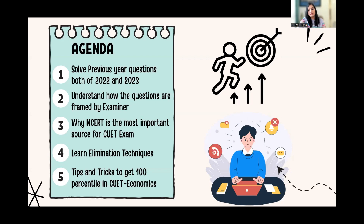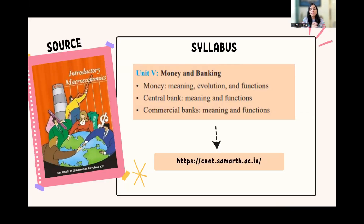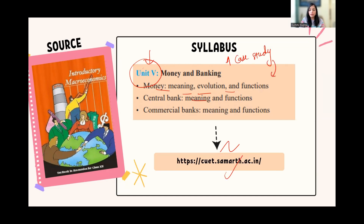This is the agenda of the video — you can pause and give it a read. The syllabus for Money and Banking covers: money — meaning, evolution, and functions; central bank — meaning and function; commercial bank — meaning and function. Personally, I would say this is the most scoring unit. A case study often comes from this unit, and the questions are relatively easier compared to other units.